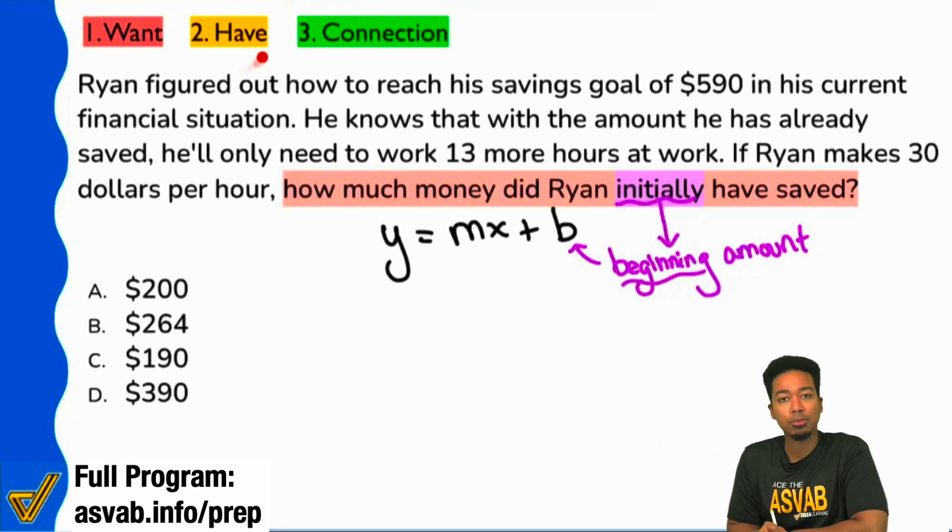Here's why. When we read through the information, which is step two, we know step one - we know what we're looking for. When we're looking for the information, this is how we're going to prove that the connection is y equals mx plus b. Let's read through this casually. Ryan figured out how to reach his savings goal of $590 in his current financial situation. So just context, our buddy Ryan over here wants to save some money. He's trying to save up to this much money right here. He knows that with the amount he already has saved, he'll only need to work 13 more hours at work. If Ryan makes $30 per hour, how much is that beginning amount? How much did he initially have?